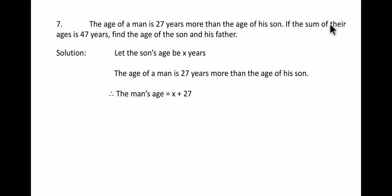Now it says the sum of the ages is 47 years. So x is the son's age plus the father's age or the man's age is x plus 27. And when you add these two, you will get 47. Simplifying this, you will get x plus x equals 2x plus 27 equals 47.